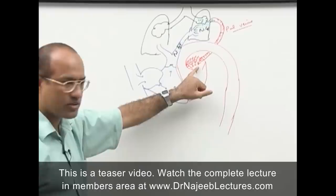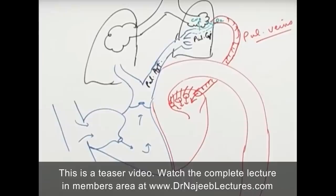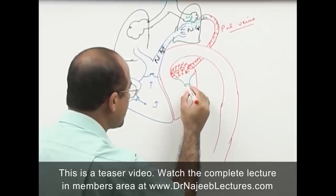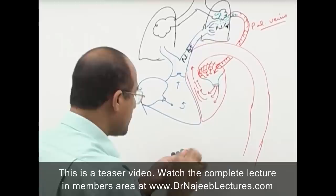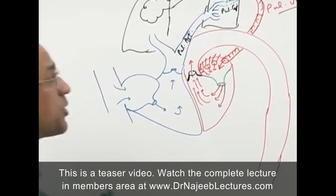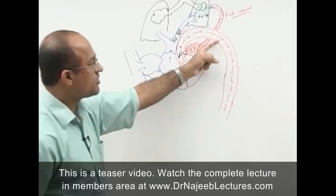Blood comes to the left atrium, then through the mitral valve to the left ventricle. From the left ventricle, blood is pumped through the aortic valve into the aorta. When blood passes through the aorta, the aorta gives its branches — this is called the systemic arterial tree.